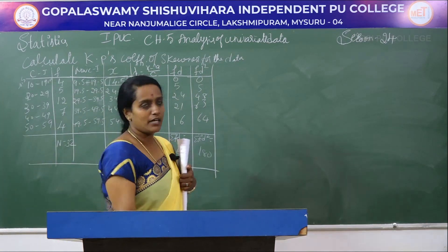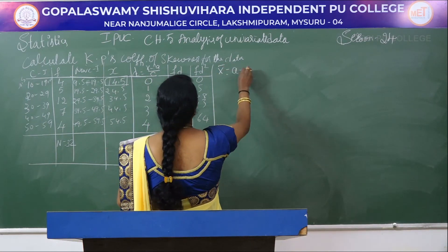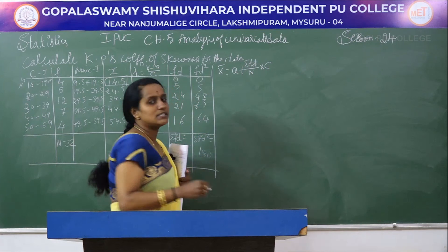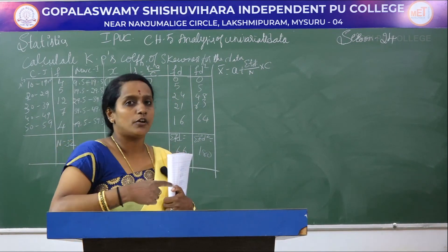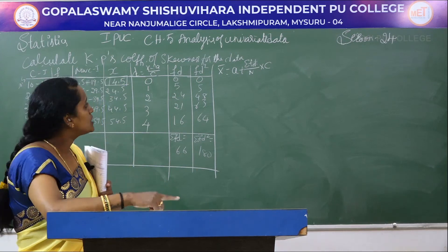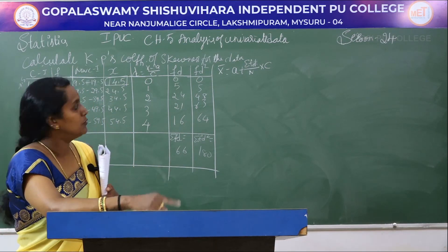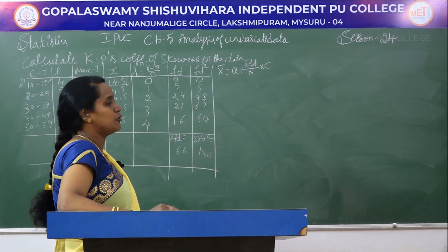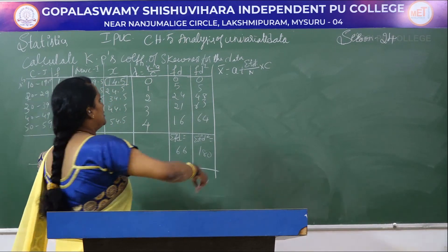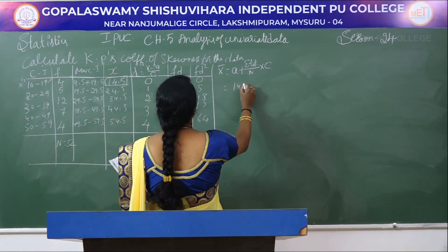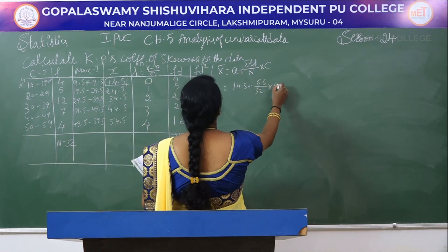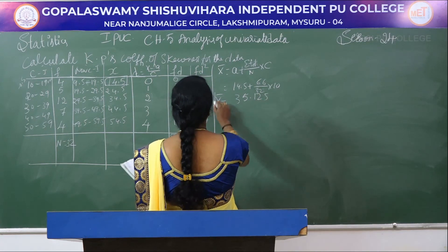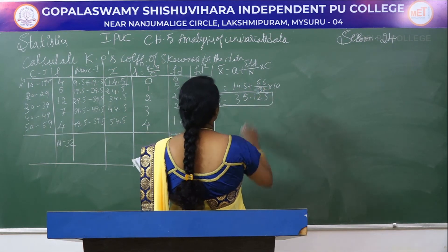Now find x̄. Using the step deviation formula: x̄ = a + (Σfd / n) × c. Here a = 14.5, so x̄ = 14.5 + (66/32) × 10 = 35.125.